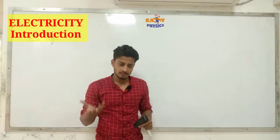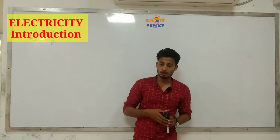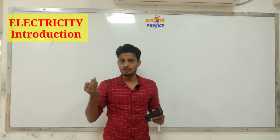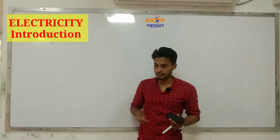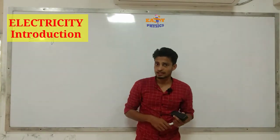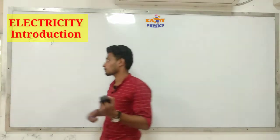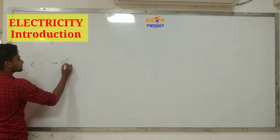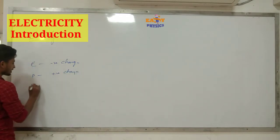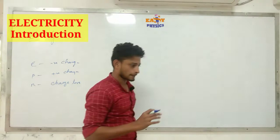Matter is made up of atoms and molecules. What do we call this atom? It has electrons, protons, and neutrons. The electron has a negative charge. The proton has a positive charge. The neutron is chargeless. These are natural properties, and by nature, proton is positive, electron is negative, and neutron is neutral.